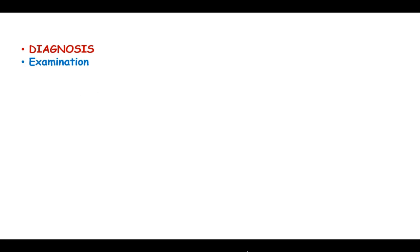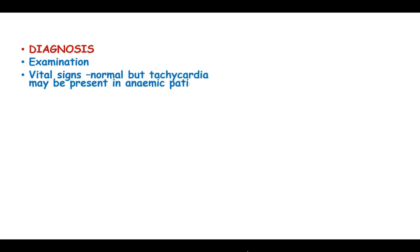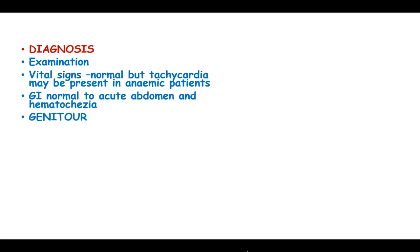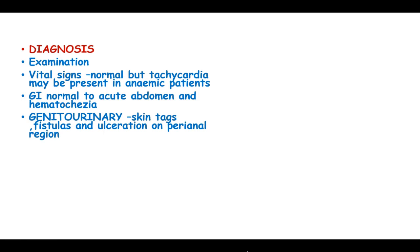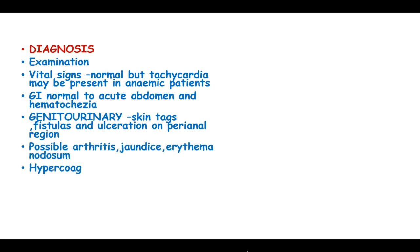In diagnosis, you conduct an examination whereby vital signs will be normal, but tachycardia may be present in anemic patients. Gastrointestinal findings are normal but sometimes there can be acute abdomen and hematochezia. Examination of the perianal area will show skin tags, fistulas and excoriation. Additional findings may include episcleritis, jaundice, erythema nodosum, and hypercoagulable state.